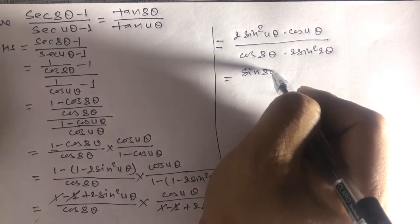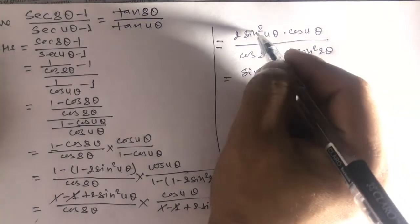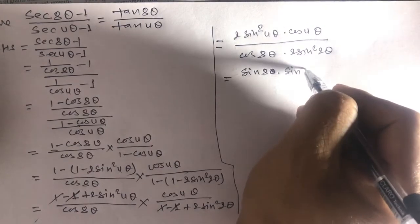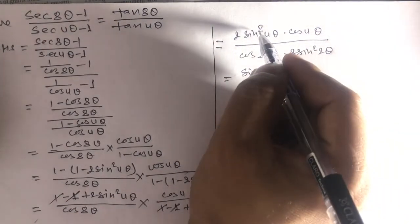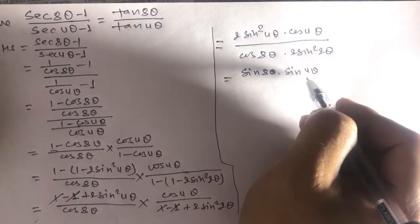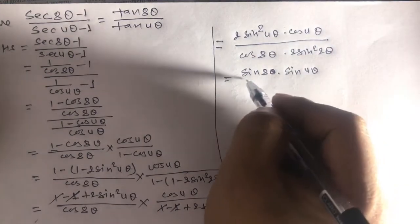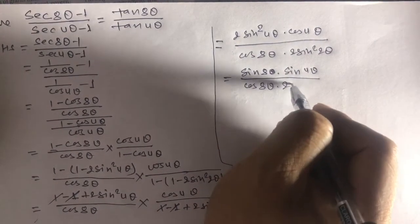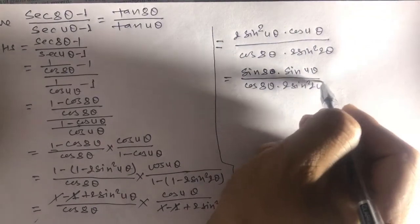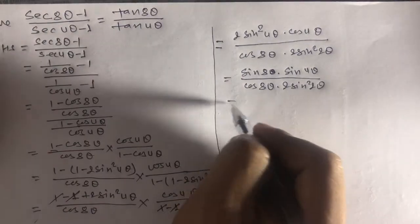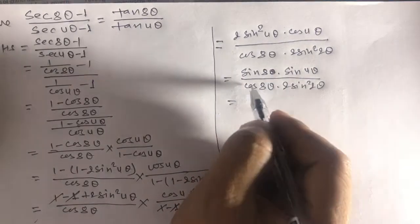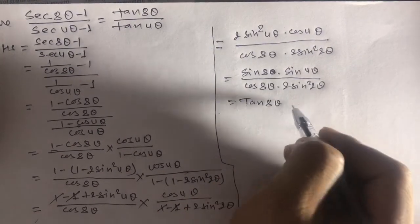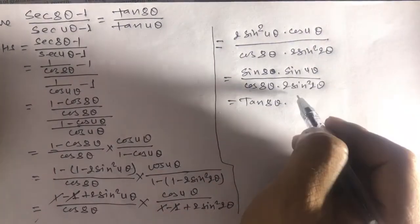We have sin4θ over cos8θ, multiplied by 2sin²2θ over cos8θ. Bringing in sin4θ/cos8θ gives us sin8θ/cos8θ, which is tan8θ, multiplied by sin4θ.